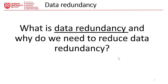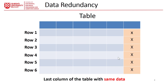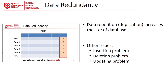So what is data redundancy and why do we need to reduce data redundancy? Let's assume we have a table with multiple different rows, and a column in which data are exactly the same. Each column is an attribute, feature, or variable, and all of this data are the same. This duplication or repetition of data increases the size of the database, and specifically when we have a large database, data redundancy can make a big issue for database manipulation.